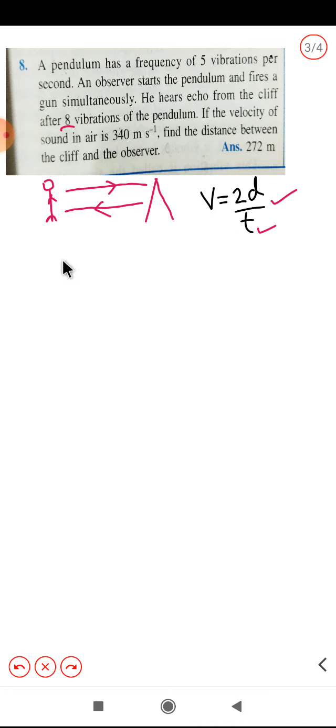Check this one. He is measuring the time with the help of a pendulum. Now pendulum has a frequency of five vibrations per second, meaning five vibrations complete in one second. If he hears the echo after five vibrations, then the time value is one second. But he is able to hear the echo after eight vibrations, so what will be the time taken for eight vibrations? We can calculate that.